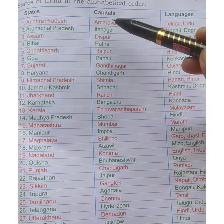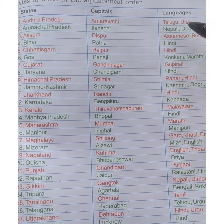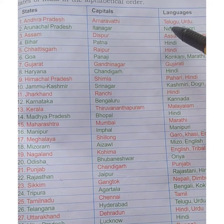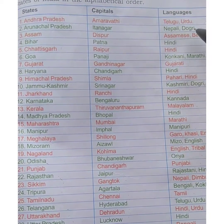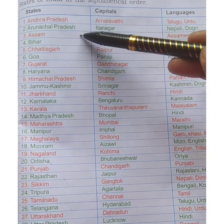Next is Arunachal Pradesh. The capital is Itanagar. The languages spoken in the state are Nepali and Dogri. Next is Assam.